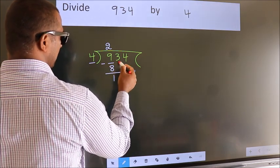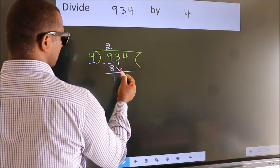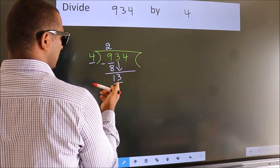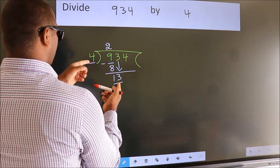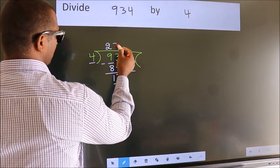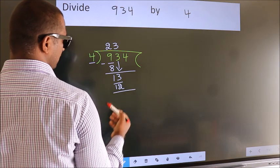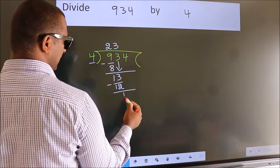After this, bring down the beside number. So 3 down, so 13. A number close to 13 in 4 table is 4 3s 12. Now we subtract. We get 1.